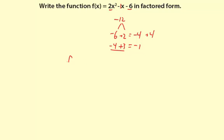So here's the factor by grouping. f of x equals 2x squared minus 4x plus 3x minus 6. That first step, all I did is split up the middle term of negative 1x into the two factors that we need.